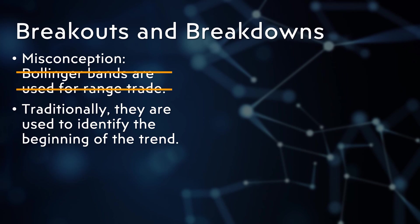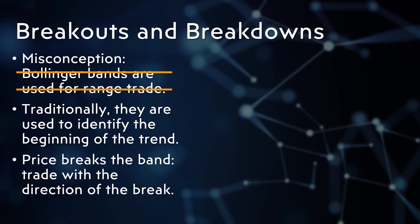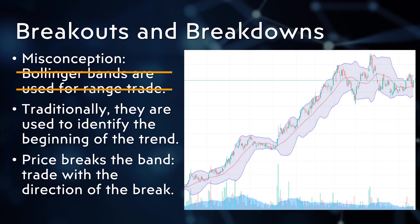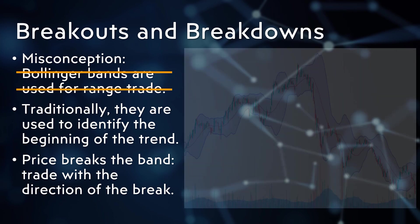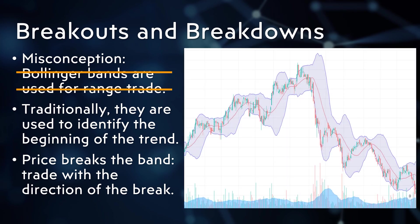When the price breaks the bands, the trader should trade in the direction of the break. In this example, the price breaks above the upper band and we can see continuation of the trend after a short consolidation. Most breakouts from the Bollinger Band are similar to other breakout patterns such as the Darvas box breakout. In another example, the price breaks down to the lower band, initiating a downtrend.